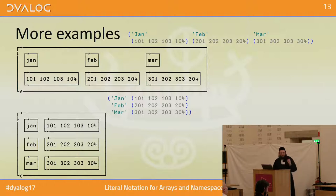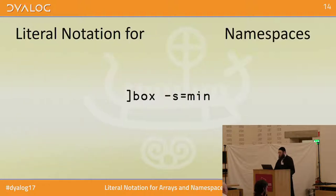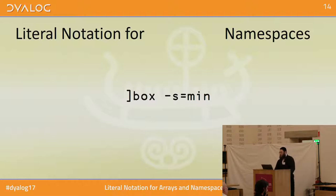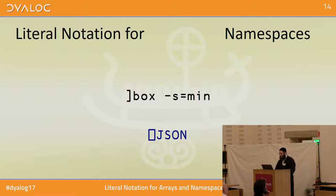That's basically the proposal for arrays. Let's move over to namespaces. For namespaces, unboxing is not going to do us much, so we'll turn that down a notch. Version 16 comes with a great little tool — ⎕JSON. Some of you may have been to the workshop on Sunday and had this presented and already used it.